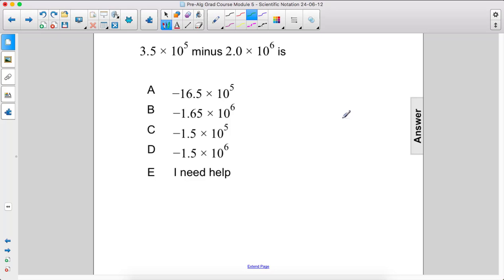3.5 times 10 to the 5th minus 2.0 times 10 to the 6th. All right, they have different exponents.